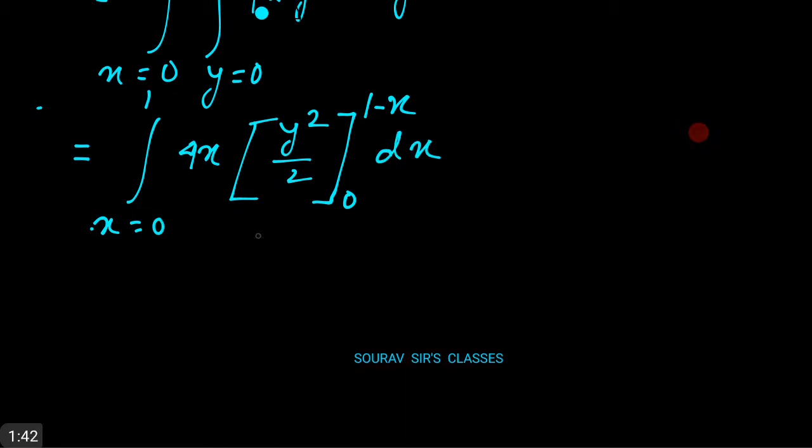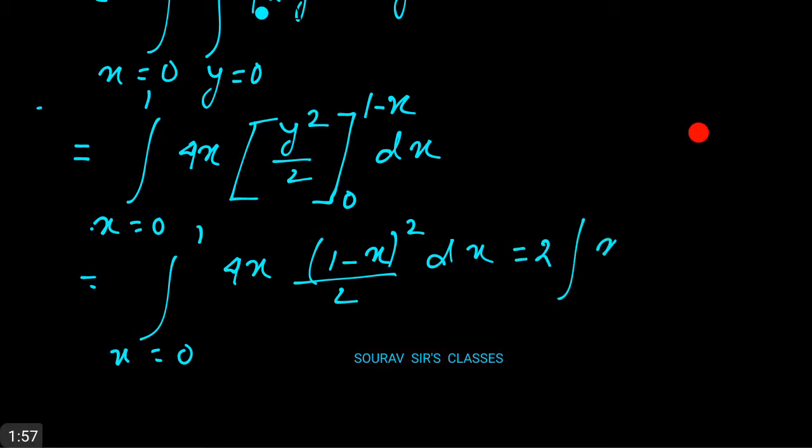So it is nothing but 4x times (1 - x)²/2 times dx and this integration limit is x equal to 0 to 1. Now this can be written as 2 times integration of x(1 - x)² times dx where the limits are 0 to 1.